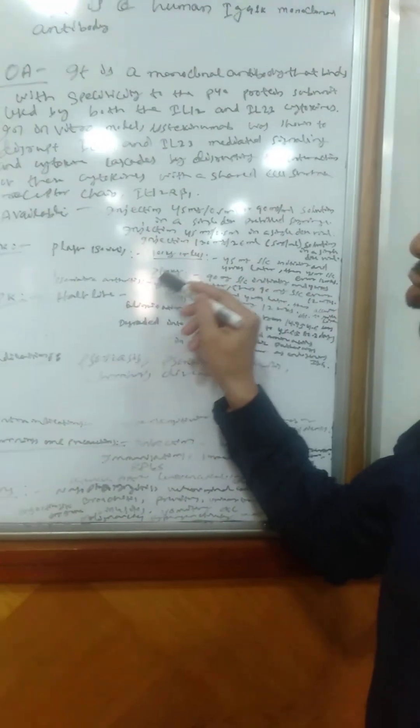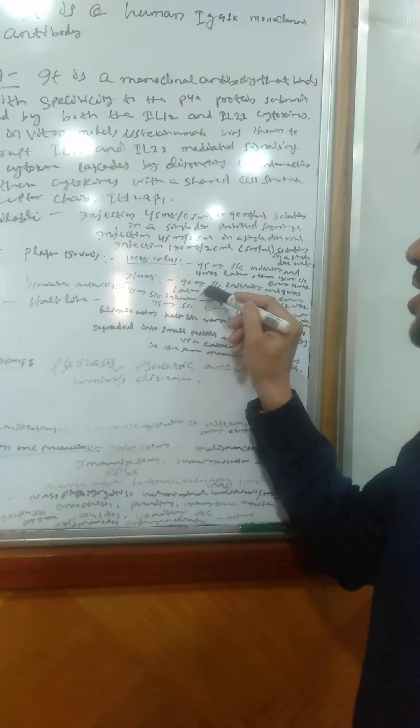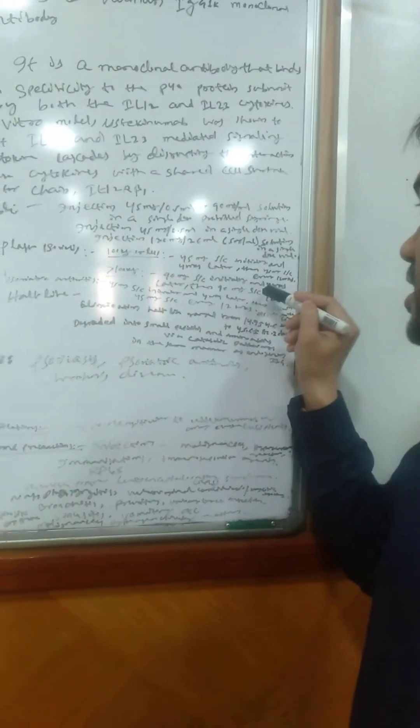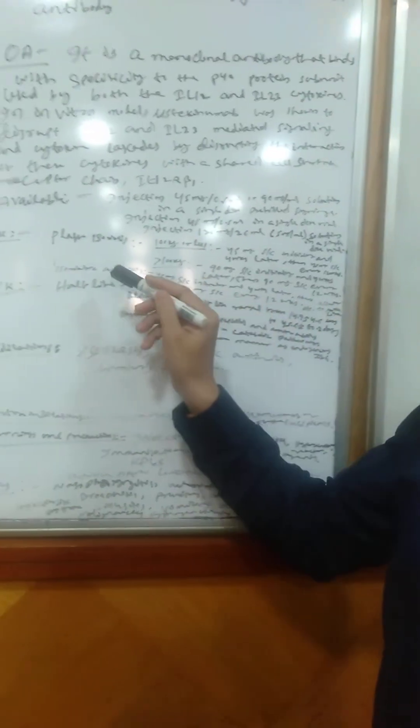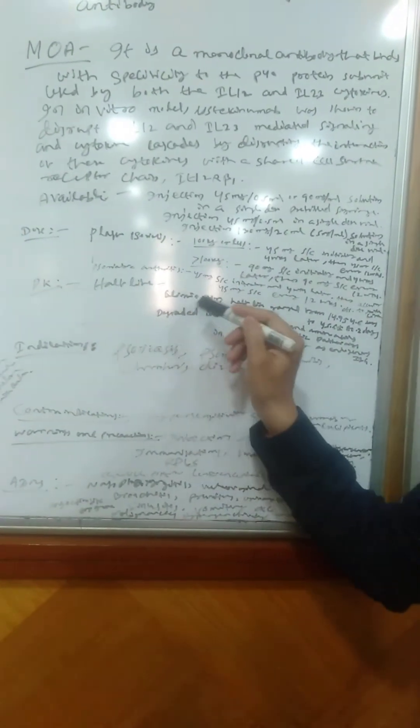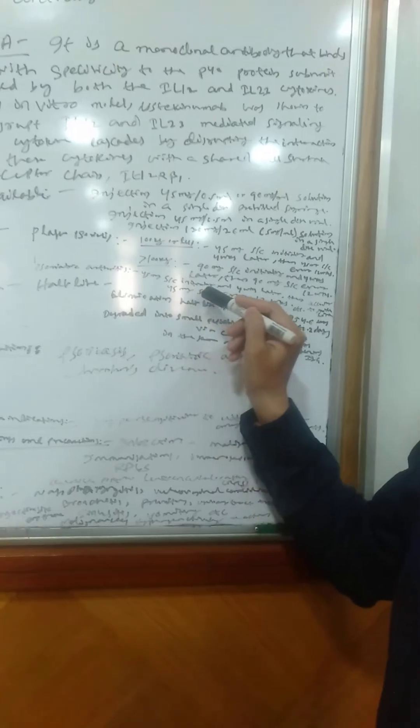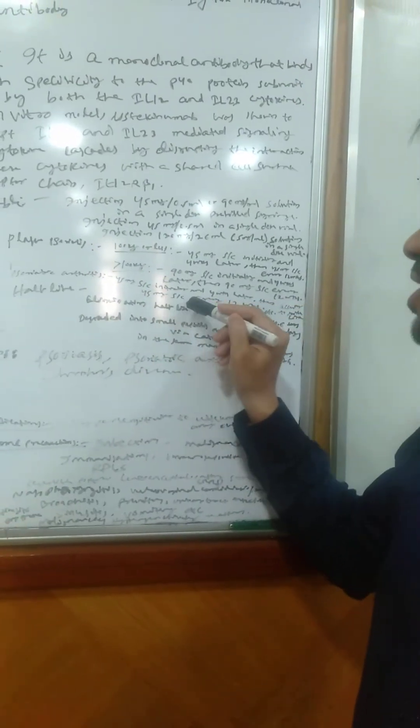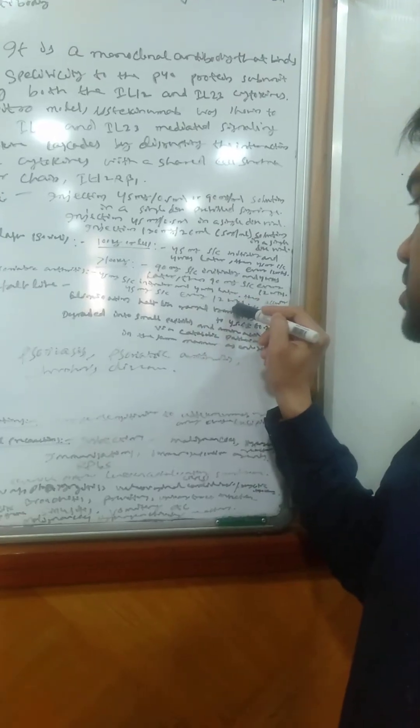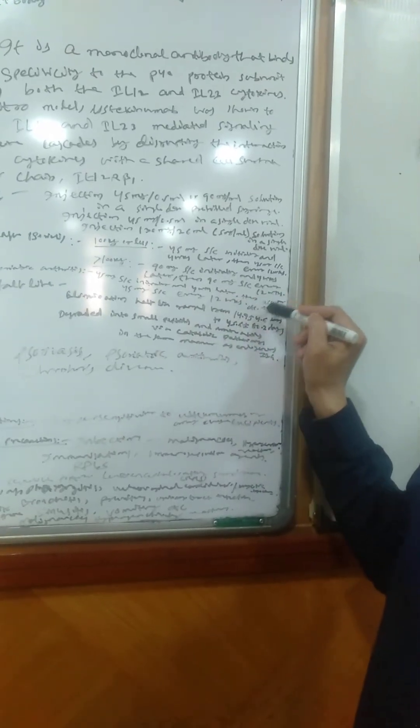If the patient is more than 100 kg, then 90 mg subcutaneous initially and 4 weeks later, then 90 mg subcutaneous every 12 weeks. In case of psoriatic arthritis, 45 mg subcutaneous initially and 4 weeks later, 45 mg subcutaneous every 12 weeks according to the guidance.